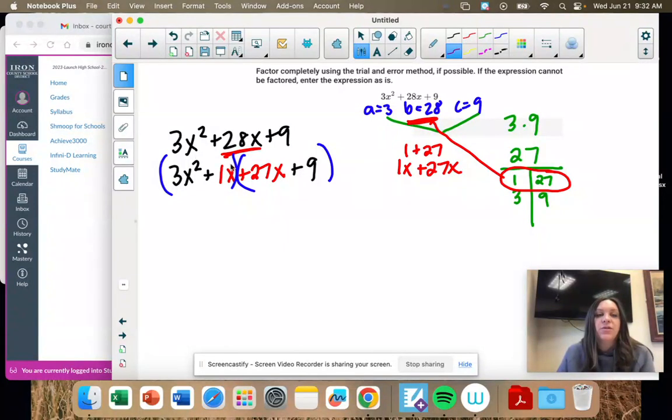So we're just focusing on 3X squared plus 1X. What's the greatest common factor? 3 and 1. You can't take anything out from 3 and 1. But these both have an X. So we're going to take out the X and factor it out. So when we take out the X, we're left with 3X because we took out an X. And then here we took out the X, so we just have 1.